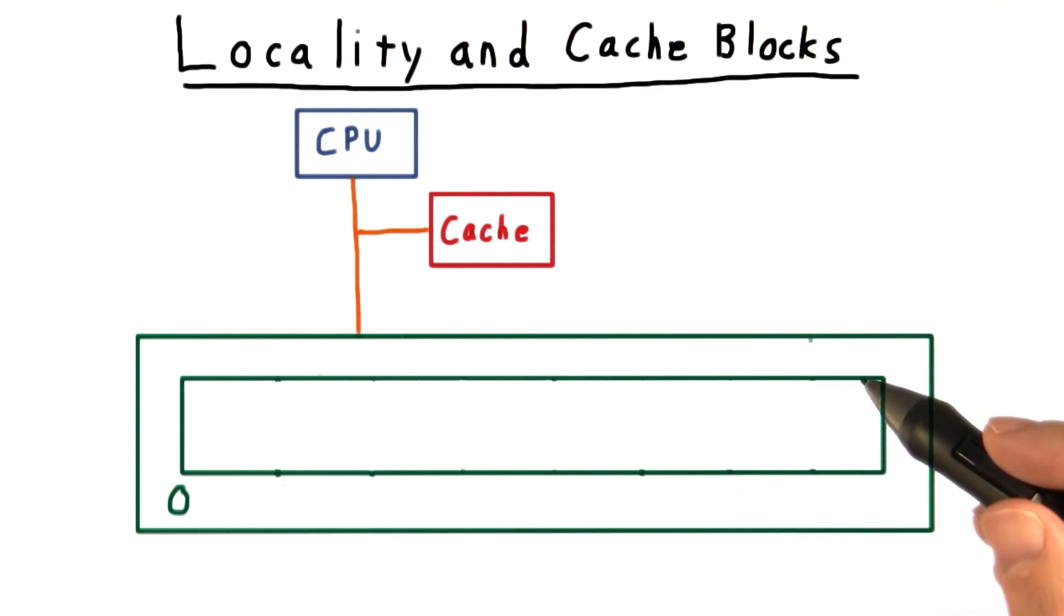Typical cache policies exploit both kinds. It exploits temporal locality by putting the data in the cache right after you use it, thinking that you're likely to use it again soon. It exploits spatial by putting not just the memory address that you access, but putting the whole block into the cache.